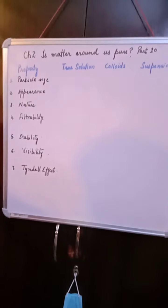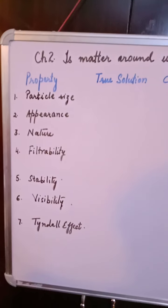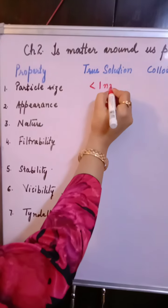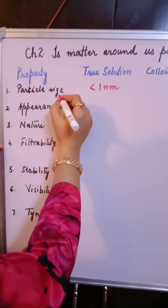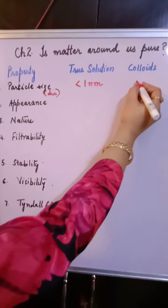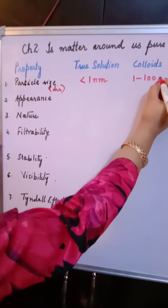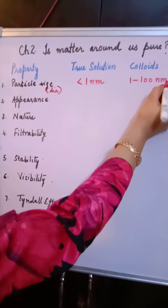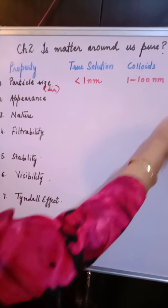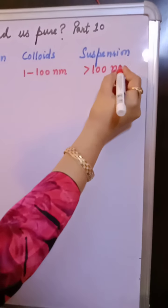First of all, let's talk about particle size. In case of true solution, it is less than one nanometer in diameter. Colloidal particles range from 1 to 100 nanometers in diameter, and suspension particles are quite big — greater than 100 nanometers in diameter.